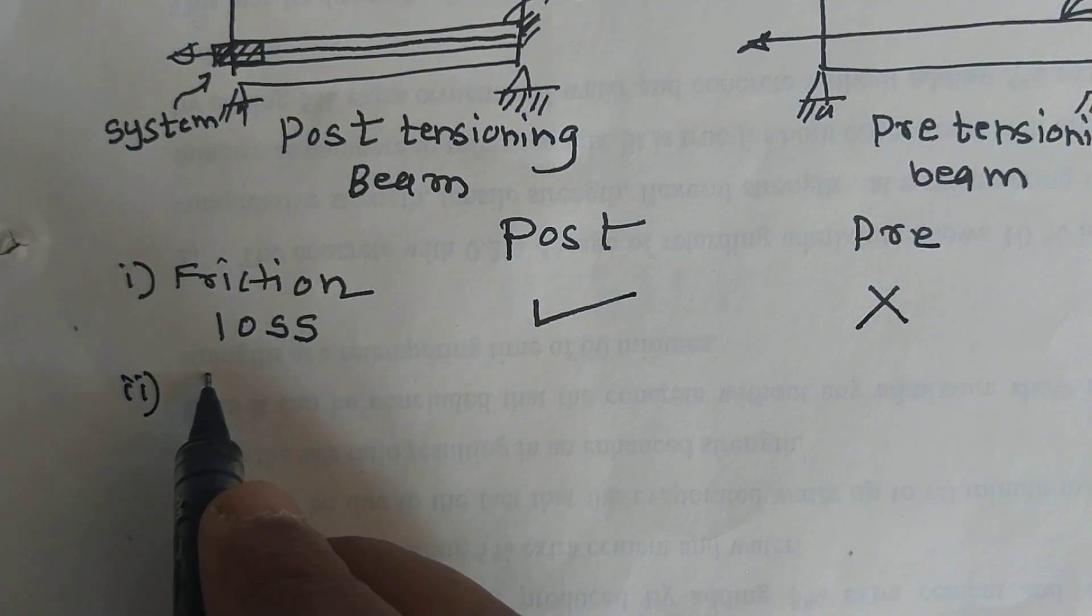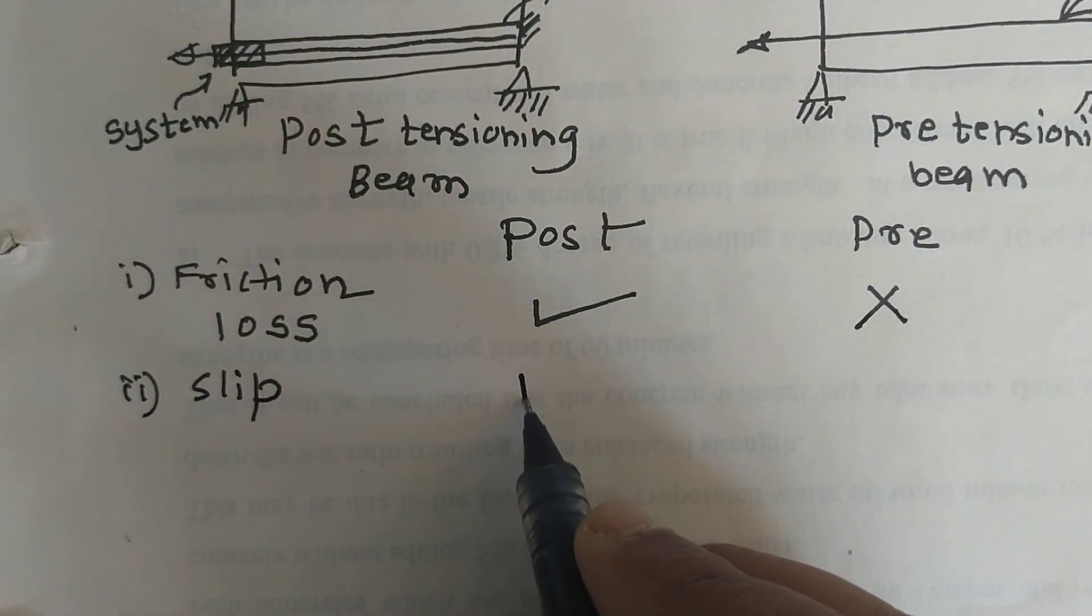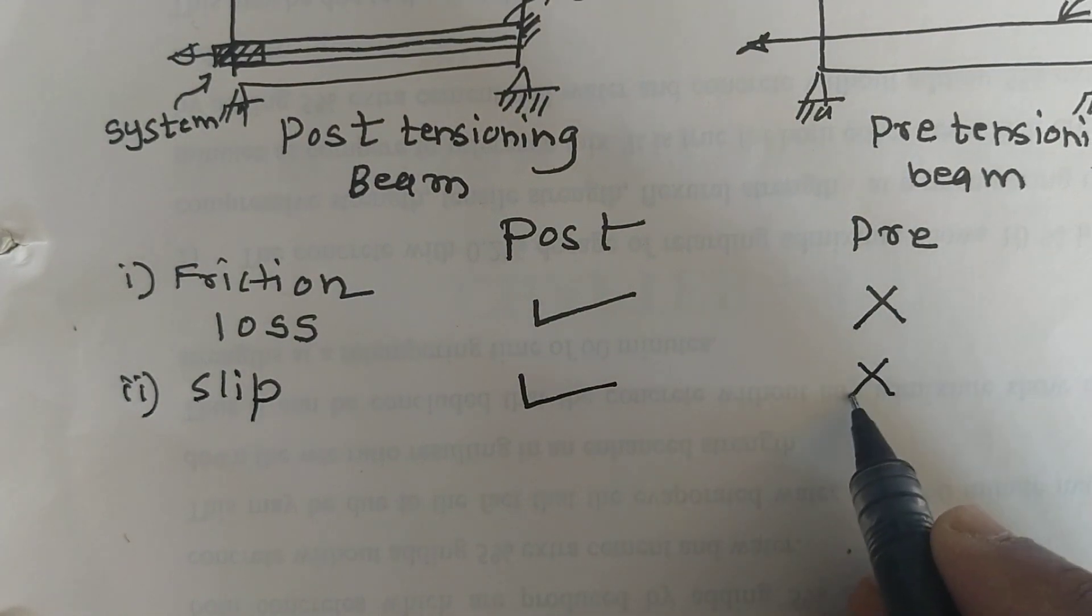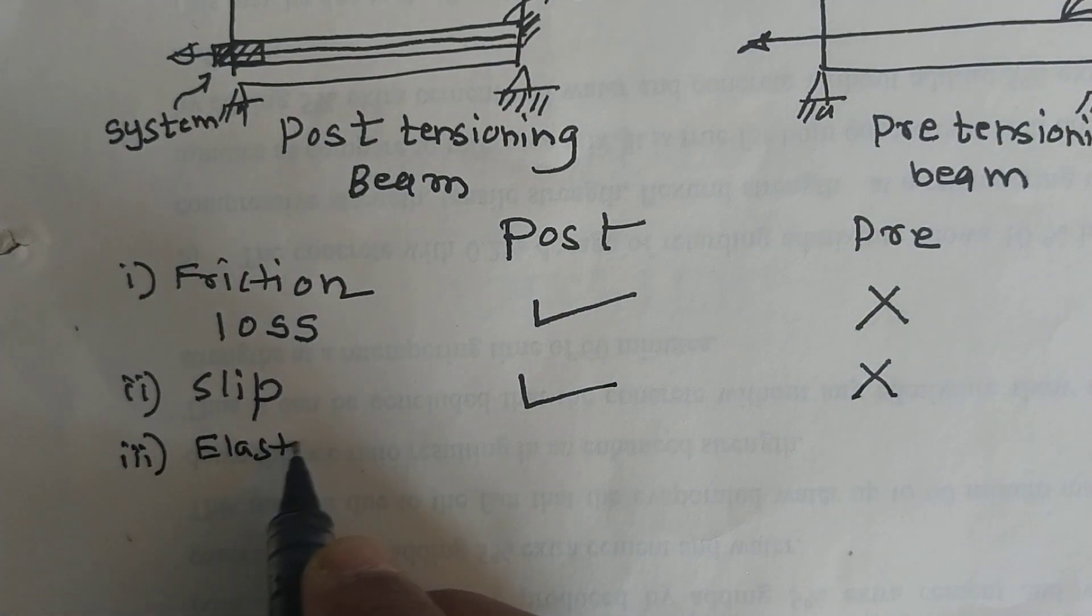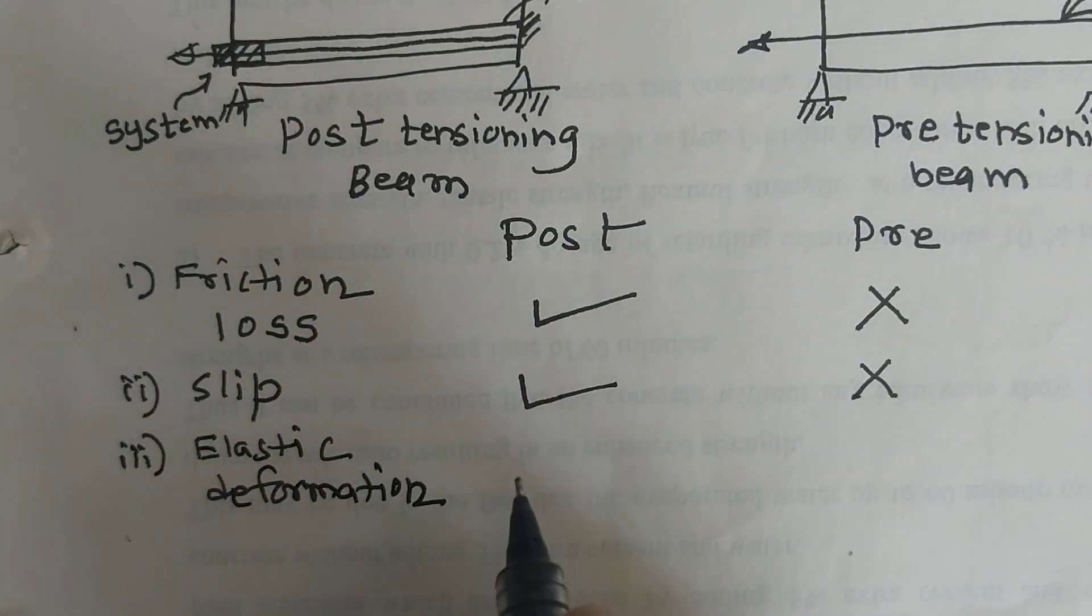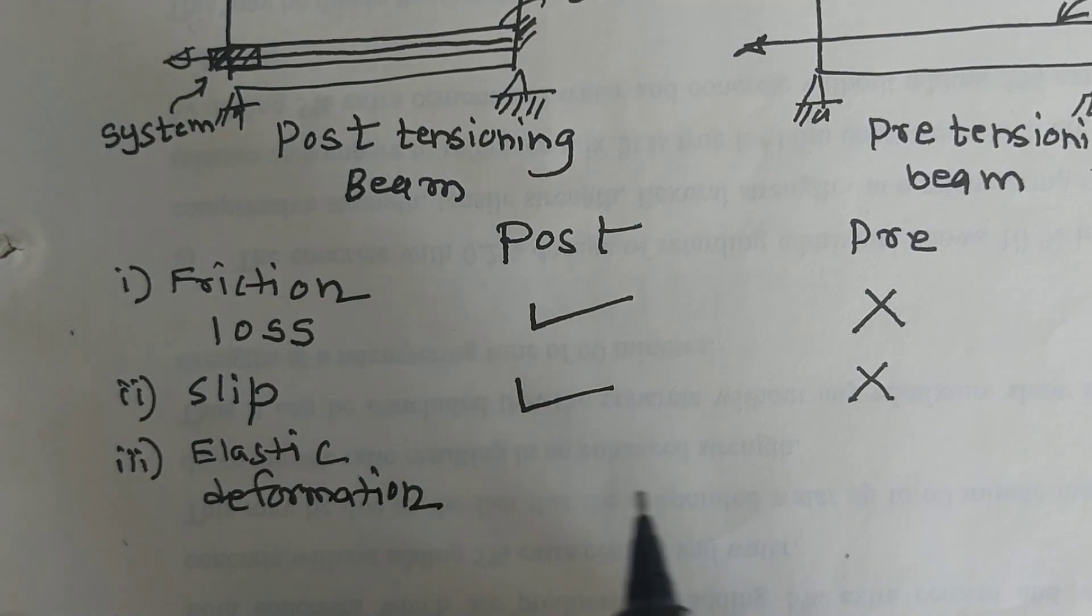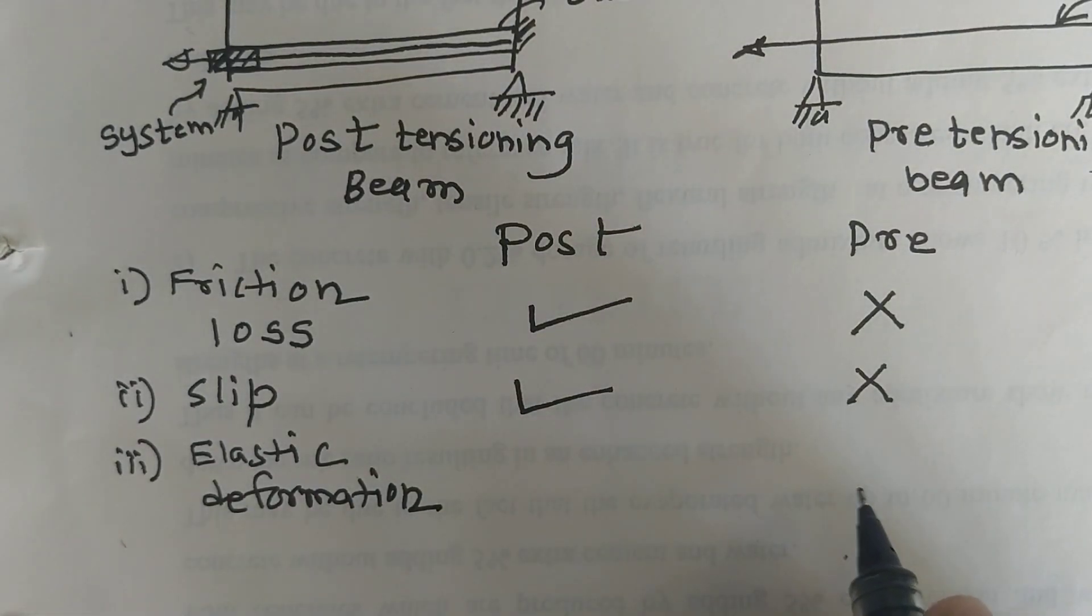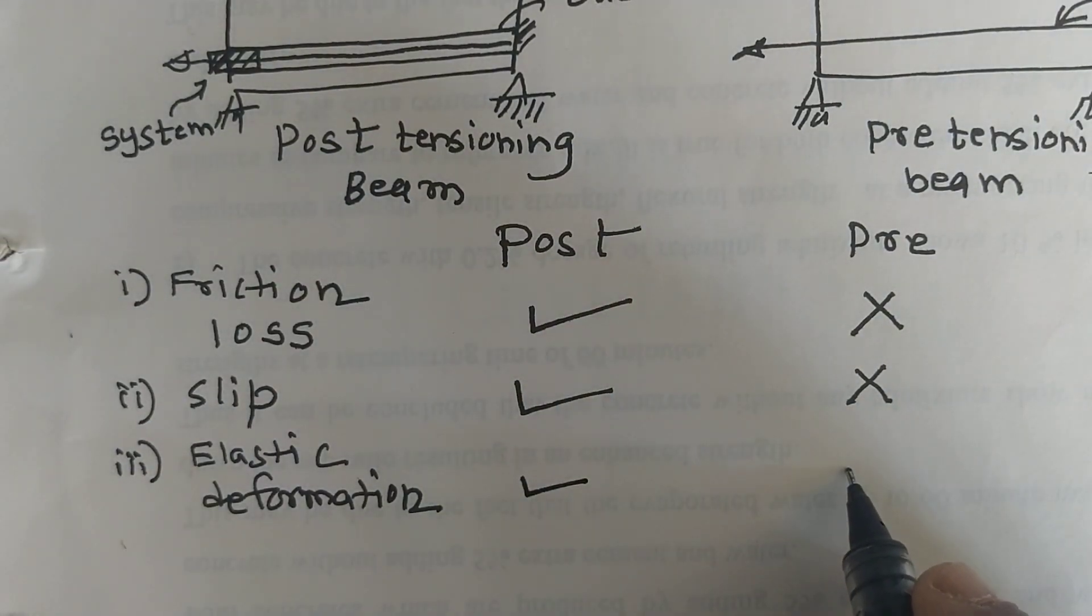Second loss is anchorage slip loss. This loss is also developed in post-tensioning, absent in pre-tensioning. Third one, elastic deformation. This loss is developed in post-tensioning when there is a tensioning of wire one after another, and in pre-tensioning this loss is developed.